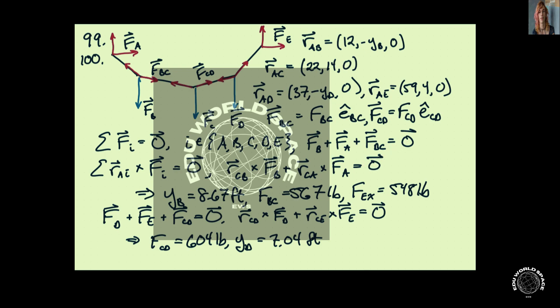We can crank through and find the unknowns that we were requested, at least partially. From this set of equations, we can get that YB is 8.67 feet. The tension in this cable is 567 pounds.